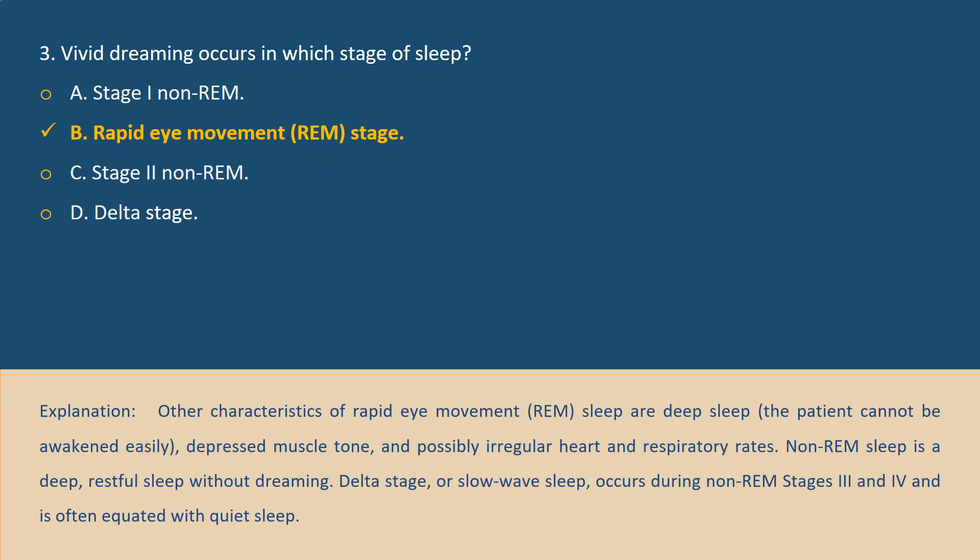Answer B. Explanation: Other characteristics of rapid eye movement (REM) sleep, or deep sleep, include that the patient cannot be awakened easily, depressed muscle tone, and possibly irregular pulse and respiratory rates. Non-REM sleep is a deep, restful sleep without dreaming. Delta stage, or slow-wave sleep, occurs during non-REM stages 3 and 4 and is often noted for its quiet sleep.